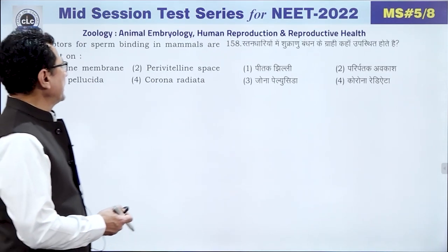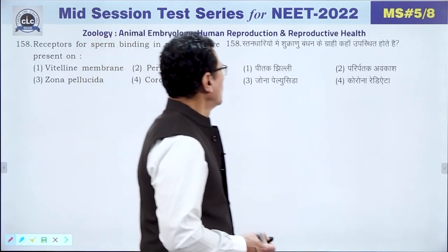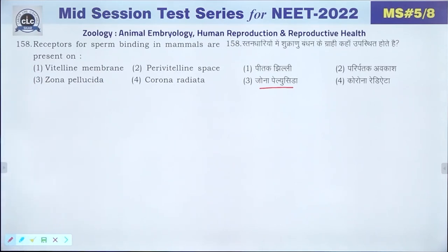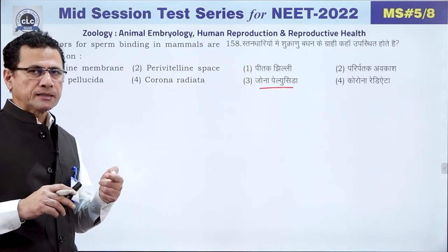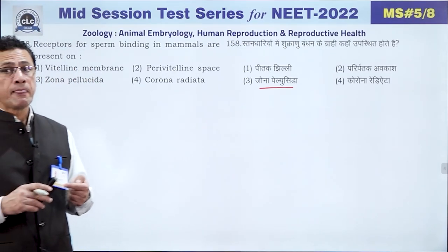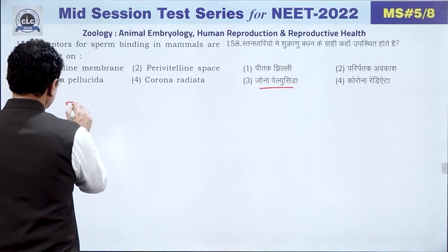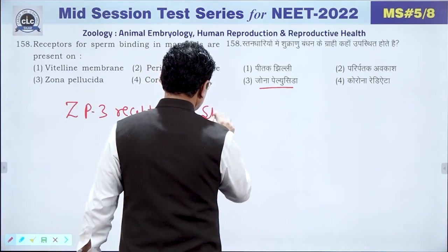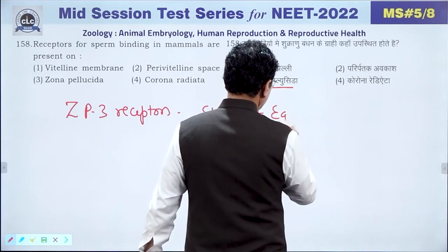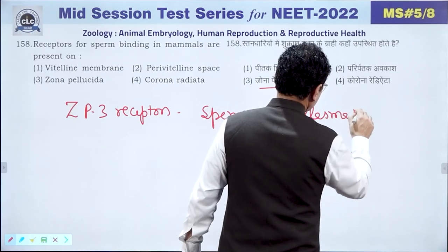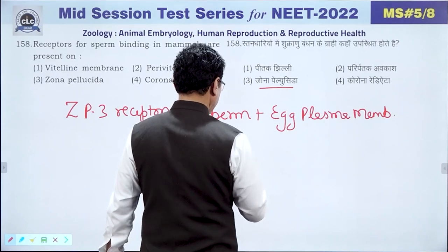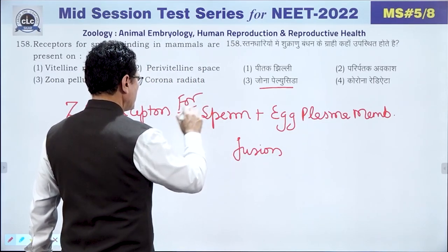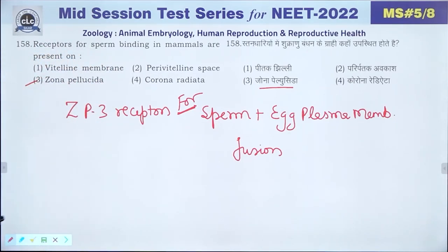Question 158: Receptors for sperm binding in mammals are present on the zona pellucida. ZP3 receptors in the zona pellucida promote fusion between the sperm and egg plasma membrane. The answer is 3 — zona pellucida.